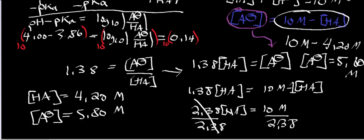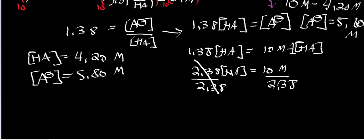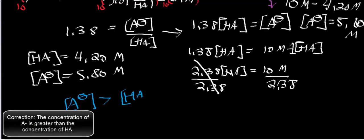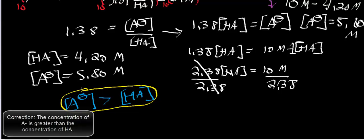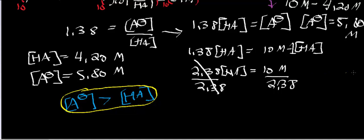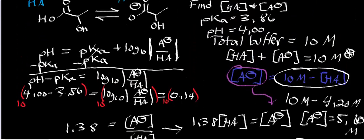Looking at these two numbers, we see exactly what we predicted. Our concentration of A- at 5.80 molar is indeed greater than the concentration of HA at 4.20 molar. You should always do this check when working these problems. We're at a pH higher than the pKa, so we should expect a higher concentration of conjugate base than conjugate acid.